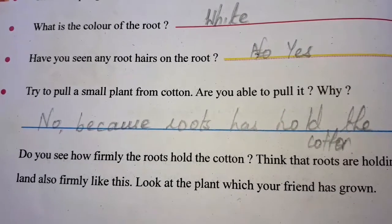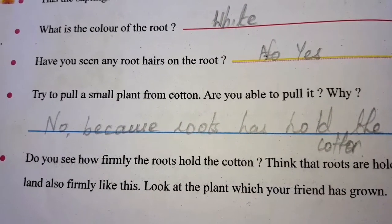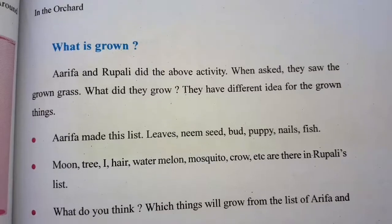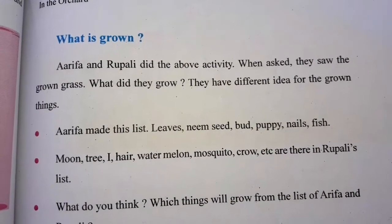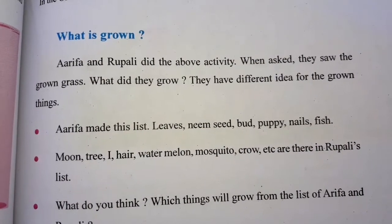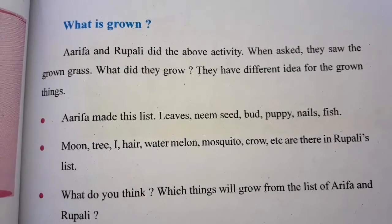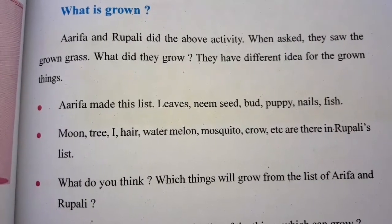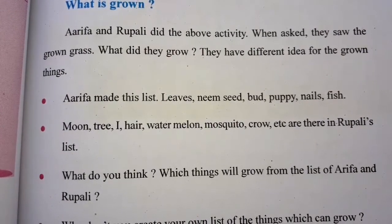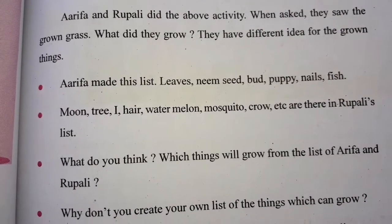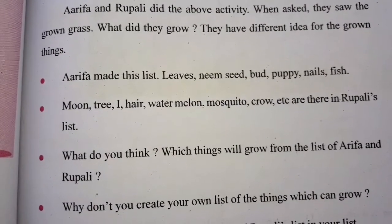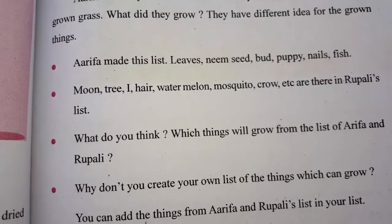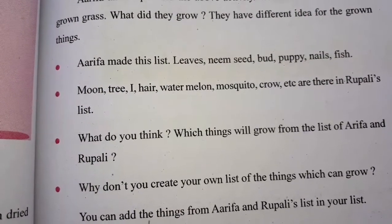Look at the plant which your friend has grown. Now observe how other friends' seeds have grown and how they look. Arifah and Rupali did the above activity. When asked, they saw the grass growing. Arifah made a list: leaves, neem seed, bird, puppy, nails, fish. Rupali's list had: moon tree, eye, hair, watermelon, mosquito, crow, etc. What do you think — which things will grow from the list of Arifah and Rupali?